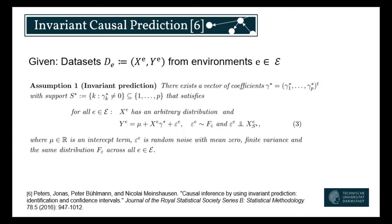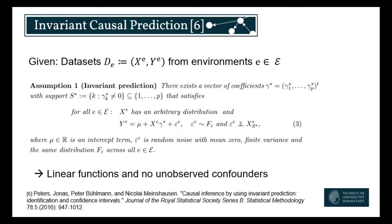The setup is linear. We have our value Y_e for the environment, a general intercept term, and then the usual linear SEM setup: some coefficients gamma multiplied with the latent variables plus some noise and intercept term to arrive at our variable. One big assumption here is linearity — if we have a causal SEM but nonlinear relations, this method at least has no guarantees. This is also a very common assumption that I'll get to soon. What this also implies is that we don't have any unobserved confounders — no variable which both influences Y and X.